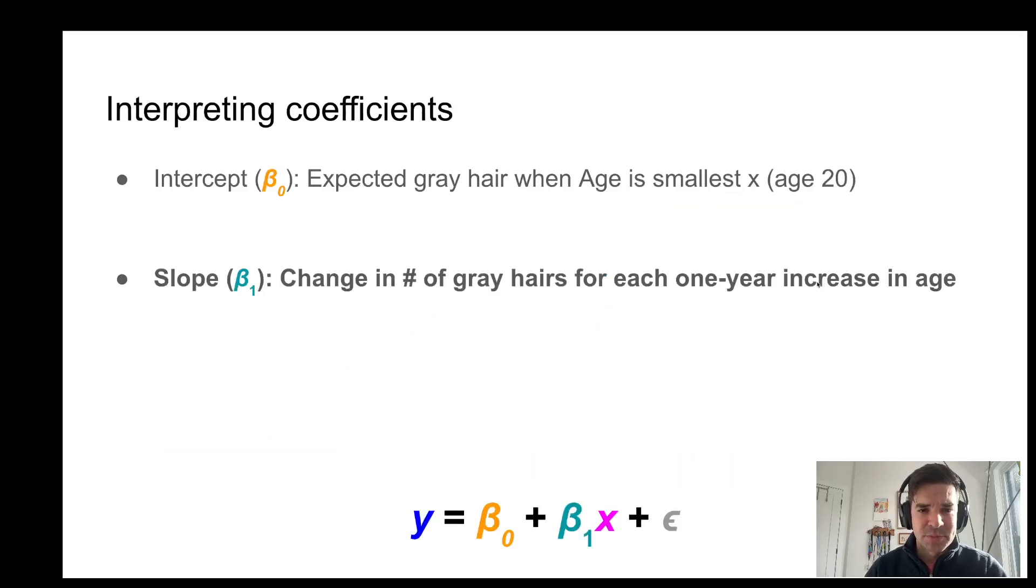So how do we interpret these coefficients after we get them back from the model? So as mentioned, your intercept or beta naught, that's the expected outcome, the expected number of gray hairs, when age is the smallest possible value. And then beta one, this is the slope. This is the change in the number of gray hairs for each one-year increase in age. I hope that makes sense.